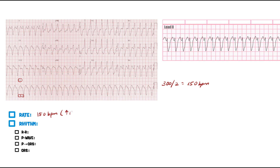150 beats per minute means this is definitely tachycardic — the ventricles are moving fast. Next, rhythm: the R-R intervals are about two boxes each, so this is regular. Now, P waves — I don't see a P wave anywhere in this rhythm strip, which is following lead two. No P wave whatsoever.